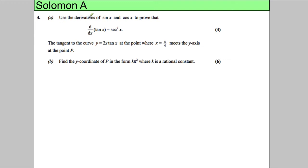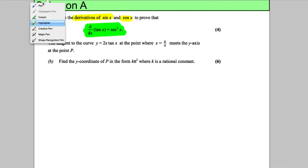We're going to use the derivatives of sine x and cosine x to prove that differentiating tan x is equal to sec squared x. That's a common proof that you need to know.